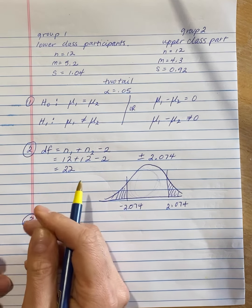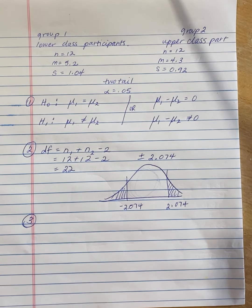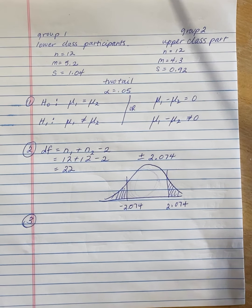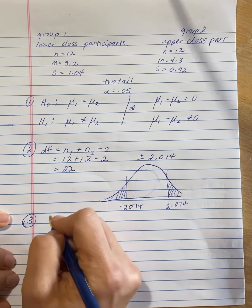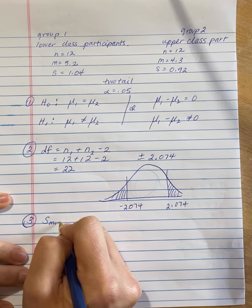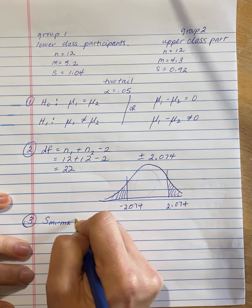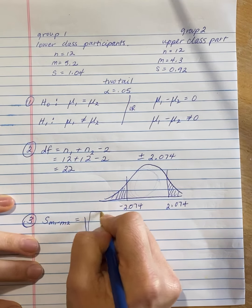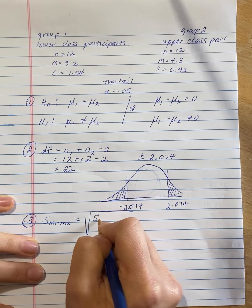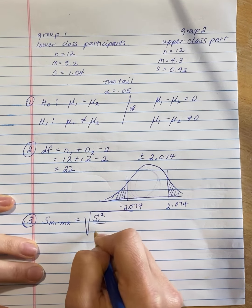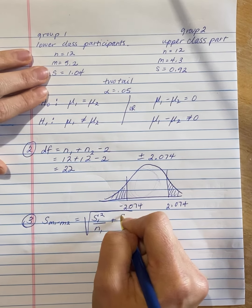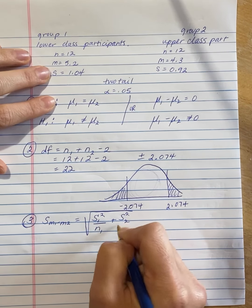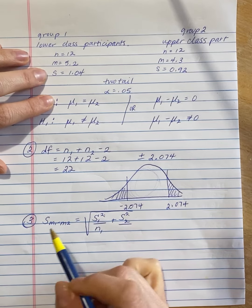Step 3 of the hypothesis testing procedure, because our sample sizes are the same, we can jump right into calculating the estimated standard error. Now the estimated standard error, the formula that we're going to use, has variance, not standard deviations. So we've got to be careful. S squared is not the same as S.